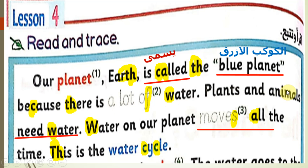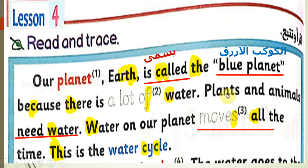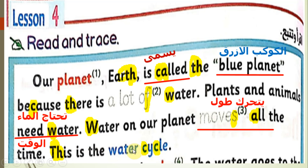'Plants and animals need water' — plants include trees, flowers, and all types of vegetation. Animals include giraffe, zebra, hippo, lion, and so on. 'Need' means يحتاج. 'Water on our planet moves all the time' — يتحرك طول الوقت. 'This is the water cycle' — دورة الماء. Note in 'cycle' the letter C is followed by Y, so it is pronounced with an S sound.